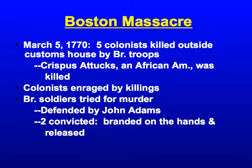Because of so much British military presence, tensions flared up — it would be like having an administrator follow you everywhere. On March 5th, 1770, colonists were killed outside a customs house by British troops. One of those killed was Crispus Attucks, an African-American. A lot of colonists were enraged because they believed these unarmed civilians were being shot by armed British soldiers. The soldiers were tried for murder and actually defended by John Adams, who was a very eloquent lawyer. Two were convicted and branded on the hands and released. For the most part, many felt they weren't really charged for what colonists considered heinous crimes, and felt the British government was corrupt in letting them off.